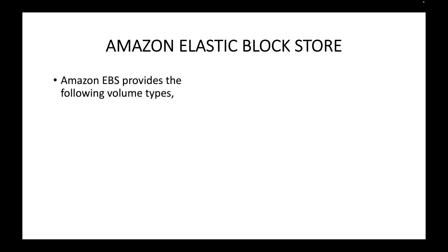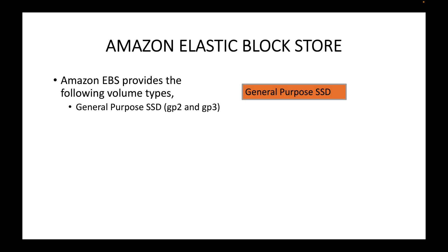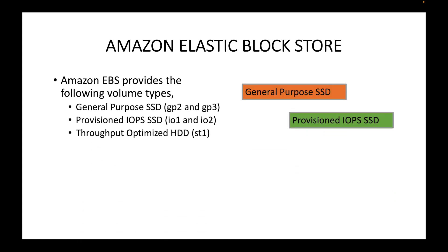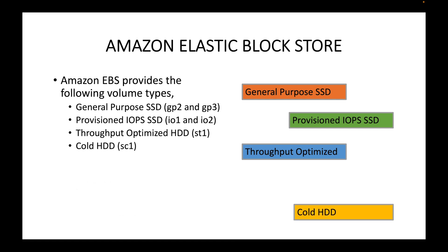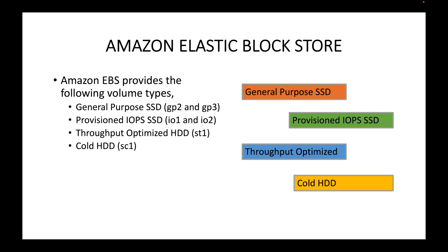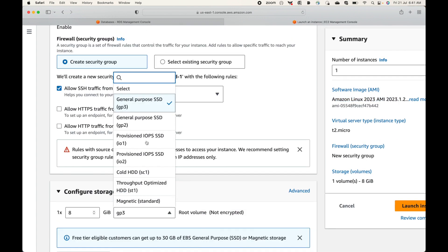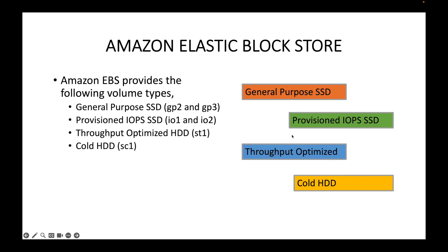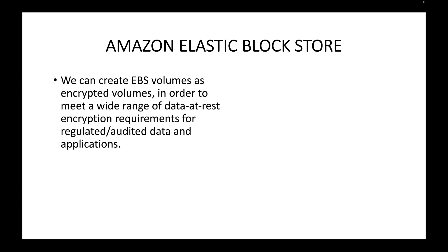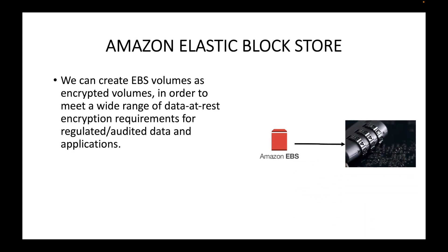EBS provides different volume types: General Purpose SSD, Provisioned IOPS, Throughput Optimized, and Cold HDD. These options are visible in the storage configuration. EBS volumes can also be created as encrypted volumes using KMS — Key Management Service — to generate encryption keys. By default the data is not encrypted, but encryption can be enabled.